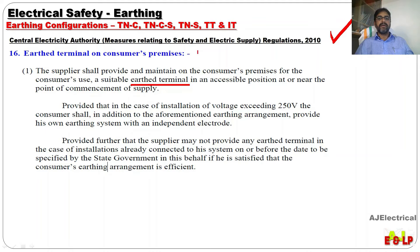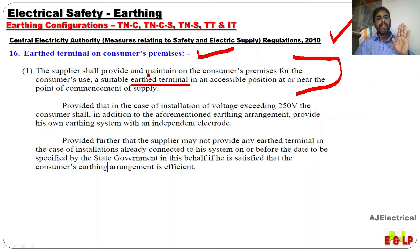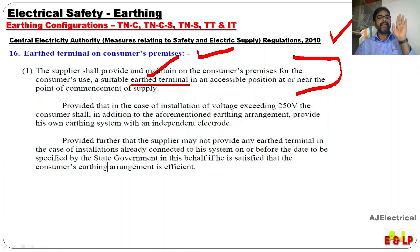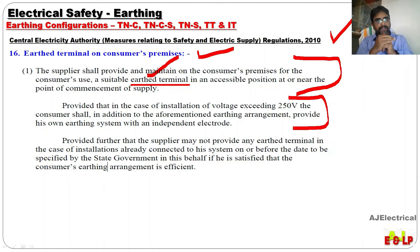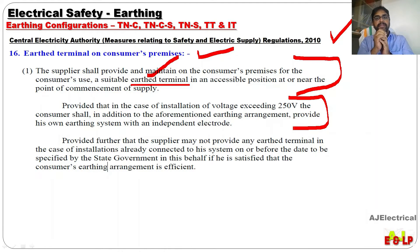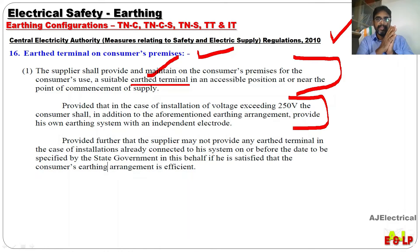Safety Regulation 16 says that the supplier should provide a suitable earth terminal to the consumer. But I am not sure whether we are getting such an earth terminal. Just below that it is said that for consumers having voltage exceeding 250 volt — meaning three phase consumers — they must have their own earthing arrangement in addition to the earth terminal given by the supplier.